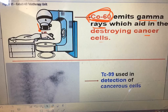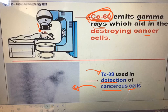Technetium-99 is used to detect cancerous cells — it can identify which cells are cancerous or malignant in your body. These radioisotope uses simply need to be memorized because they're not on your reference table.